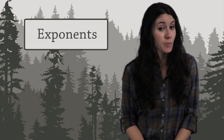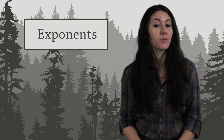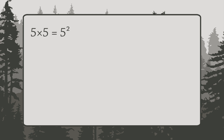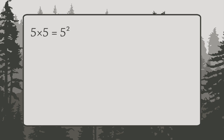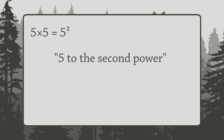An exponent is used for repeated multiplication. Here's how it works. 5 times 5 is written like this. The little 2 up above is called an exponent, and it means you multiply two 5s. You say this aloud as 5 to the second power. If the exponent is 2, you can also say 5 squared, because it's the area of a square with sides of length 5.